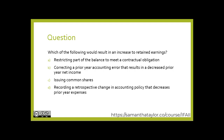Which of the following would result in an increase to retained earnings? A: Restricting part of the balance to meet a contractual obligation. B: Correcting a prior year accounting error that results in decreased prior year income. C: Issuing common shares. D: Recording a retrospective change in accounting policy that decreases prior year expense.